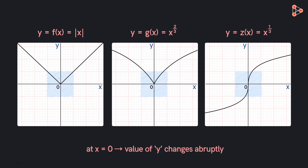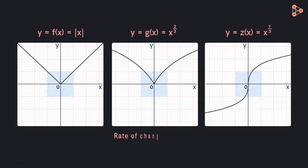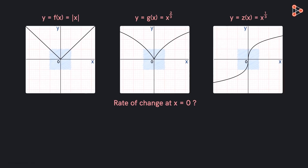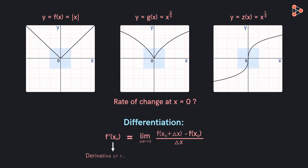Similarly, this happens in the second case, and in the third one, the curve almost looks like a straight line at X equal to zero. So a question arises here: if the change in these functions is sudden at X equal to zero, then what is their rate of change at X equal to zero? What will we get if we apply the process of differentiation here? What will be the derivative of these functions at X equal to zero?